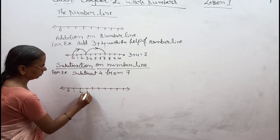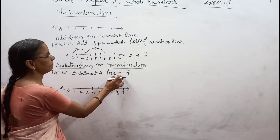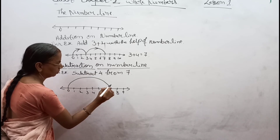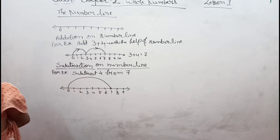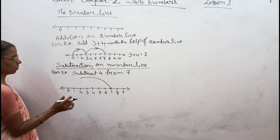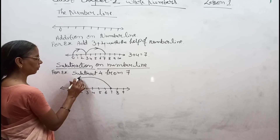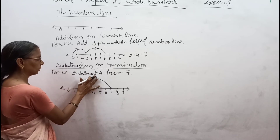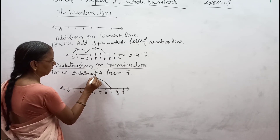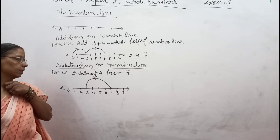We mark 0, 1, 2, 3, 4, 5, 6, 7, 8, 9. We have to subtract 4 from 7, so first go to 7, then subtract 4 by moving left — 1, 2, 3, 4. We land on 3. By subtracting 4 from 7, we get 3. Like this, we can represent subtraction on the number line.